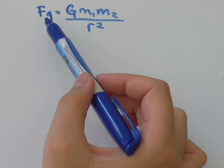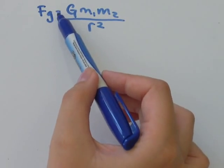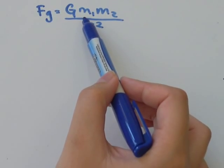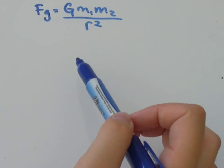So the formula says Fg, or the force of gravity, equals Gm1m2 over R squared.